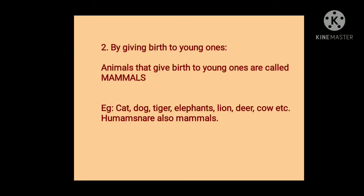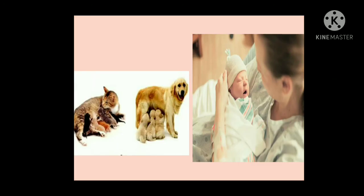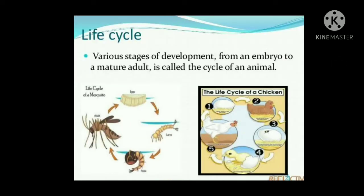Humans are also mammals. All animals like cats and dogs, and living beings like humans, give birth to their young ones, to their babies. Children, we will also come across a word called life cycle. Various stages of development from an embryo — that is from an egg — to a mature adult is called the life cycle of an animal. Every animal that reproduces goes through this life cycle.